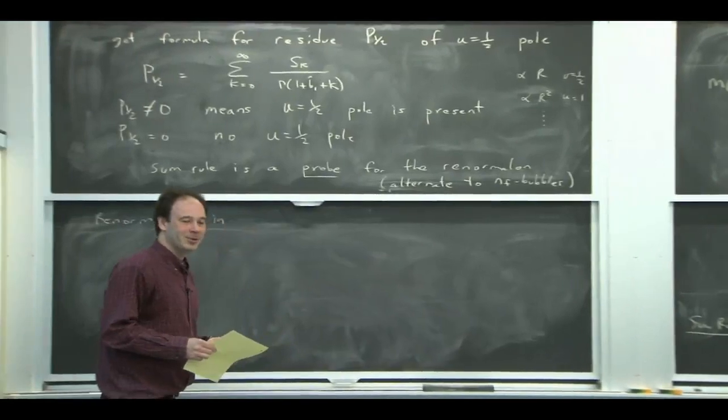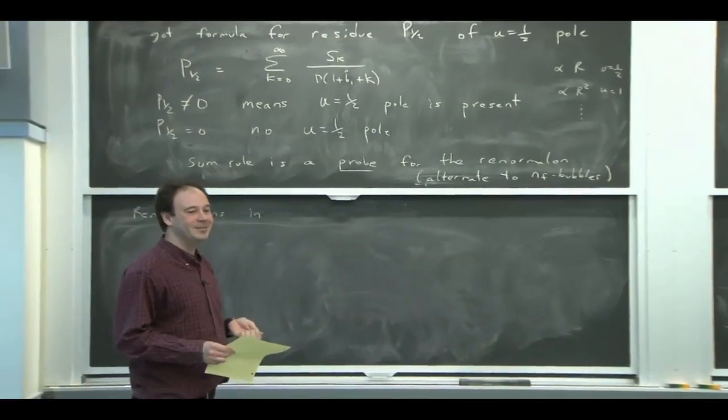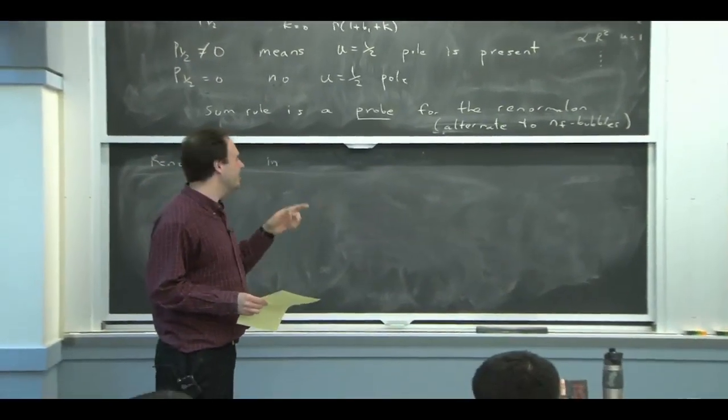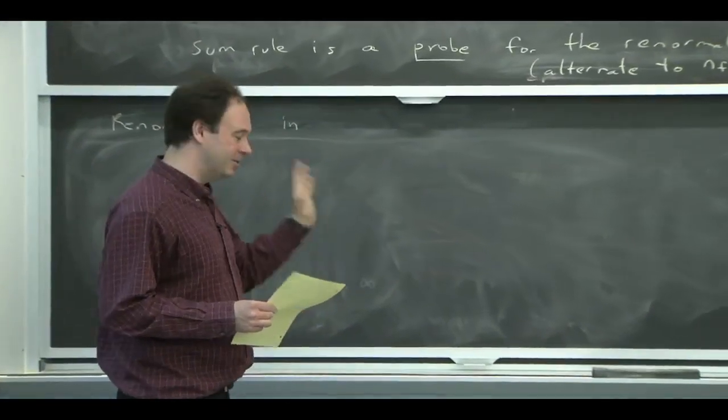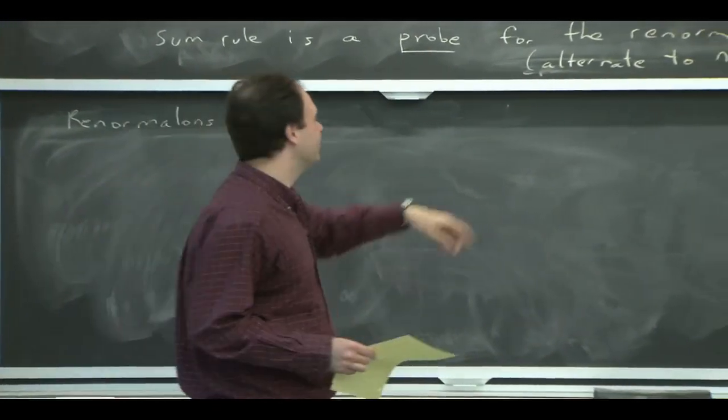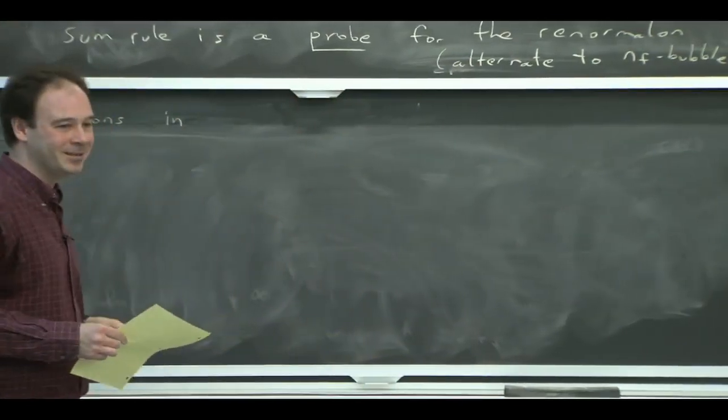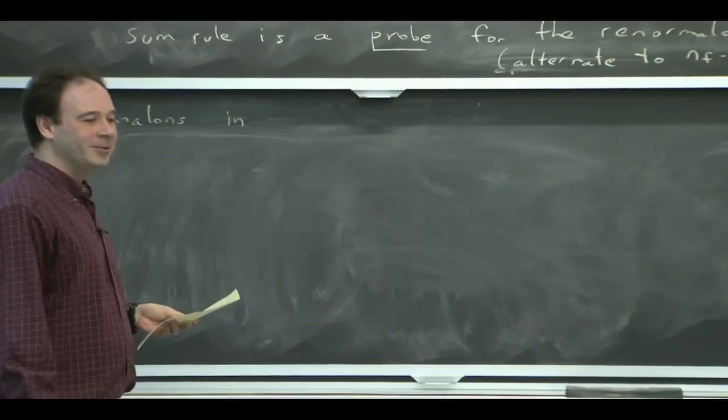There's not really enough perturbative information that we have about QCD to be able to do that type of thing. There's a few cases where u equals 1 half is absent. And then you can do that kind of thing. I mean, there's actually many cases where u equals 1 half is absent. You can look for u equals 1, but looking for a subleading renormalon is something that nobody's found on.